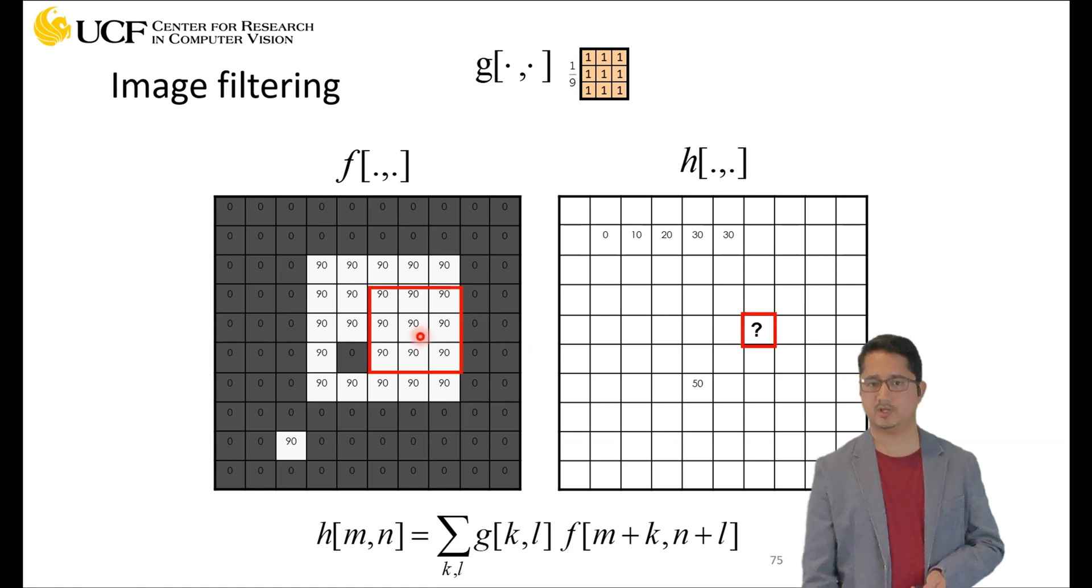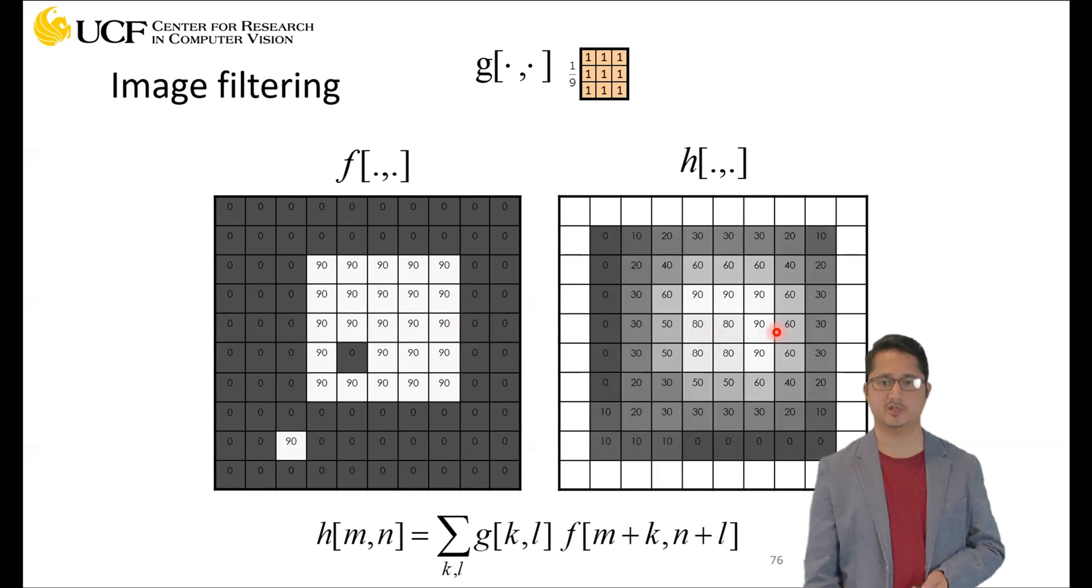At this location, what's going to happen? The values won't change because all the neighborhood is the same set of values - everything is 90, so it will still be 90.